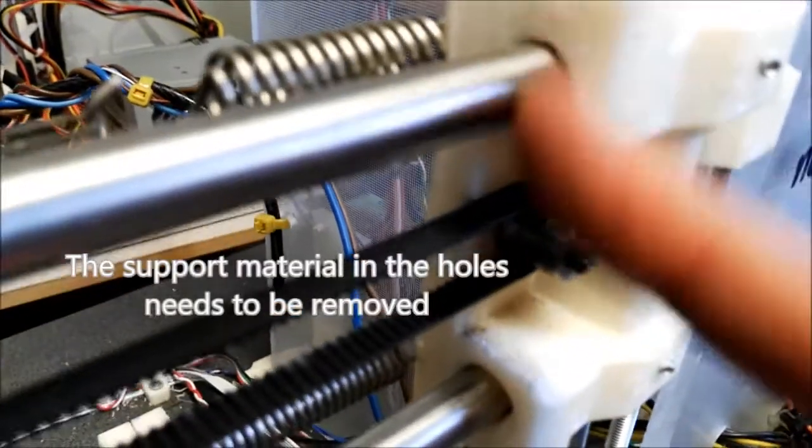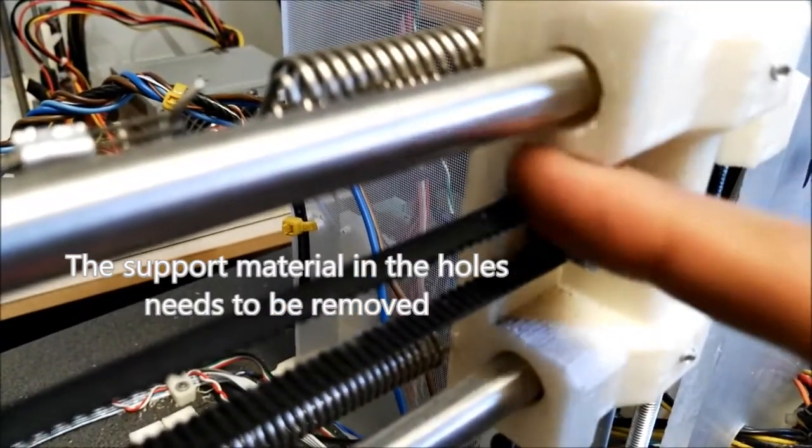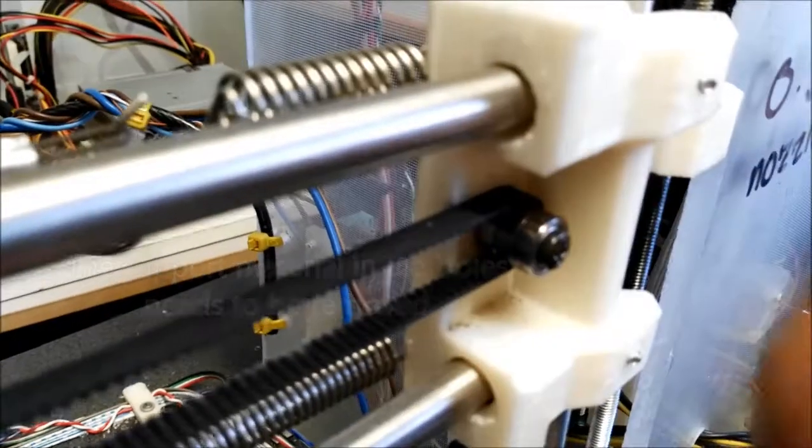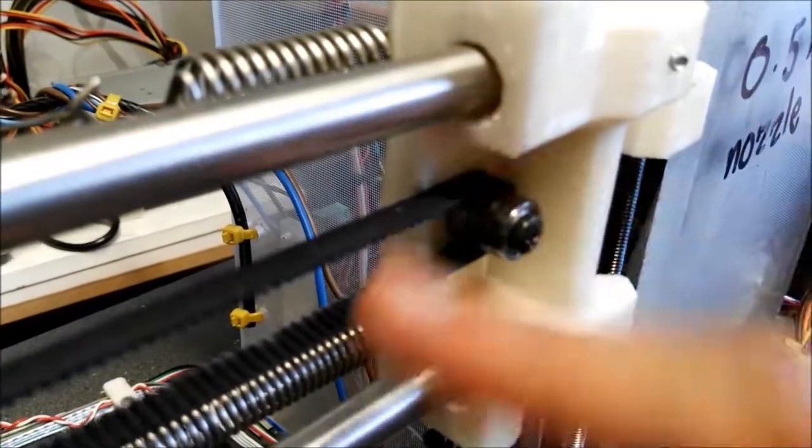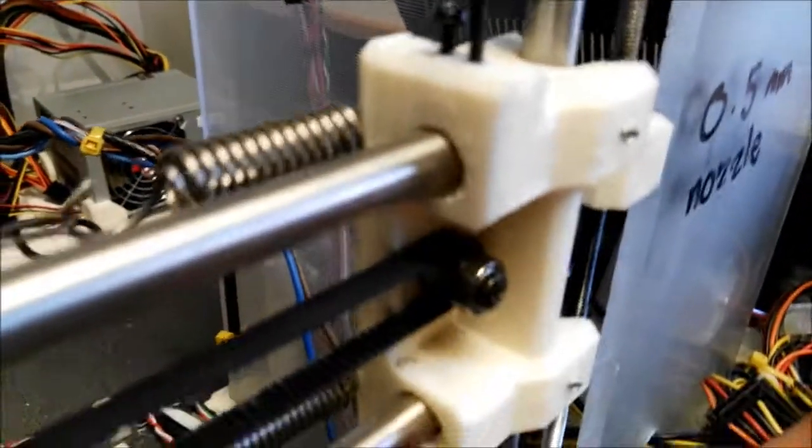Basically, this part of the x-idler needs to be cleaned out or gouged out with something, either a screwdriver or a deburring tool if you have a deburring tool, to allow the rods to move freely inside of them.